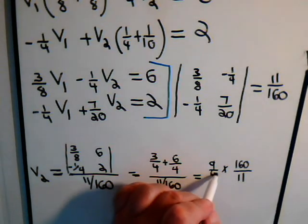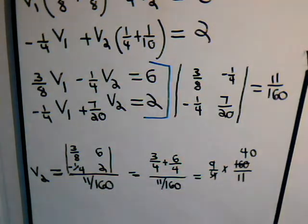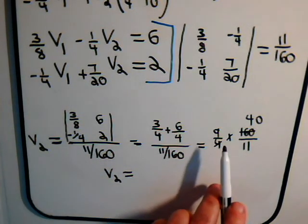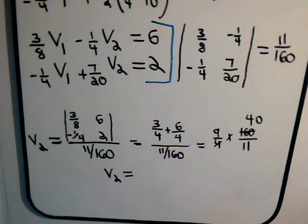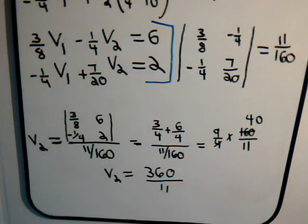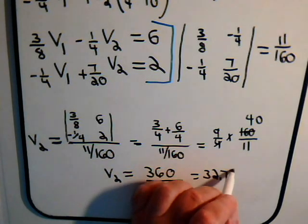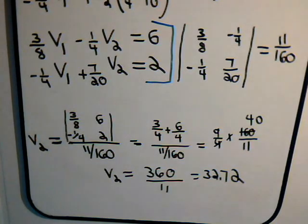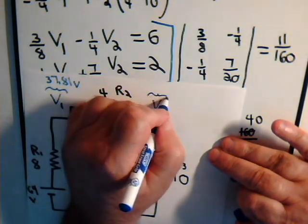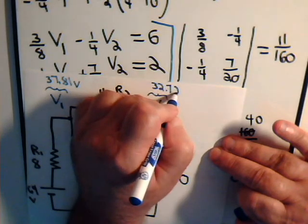So this is 9/4 times 160 divided by 11. That's 40, so we have V2 equals 9 times 40, that's 360 divided by 11. Put it on the calculator, and that's about 32.72. So now we know what V2 is, that's 32.72 volts.